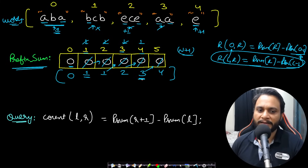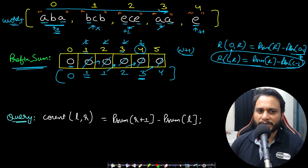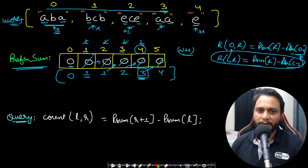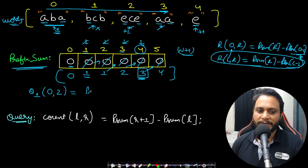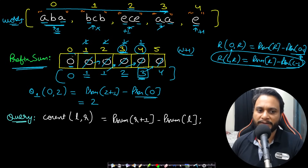So prefix[4] = 3 means: from the beginning up to index 3, there are 3 words starting and ending with a vowel. Now for query [0, 2]: count = prefix[2+1] - prefix[0] = prefix[3] - prefix[0] = 2 - 0 = 2. Exactly two words from index 0 to 2 start and end with a vowel.